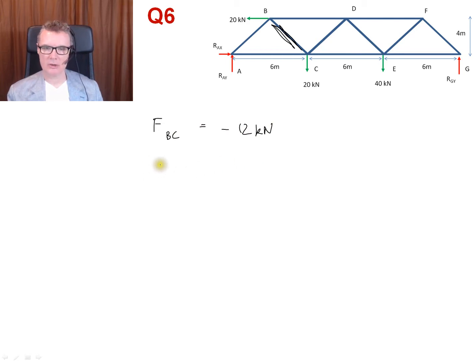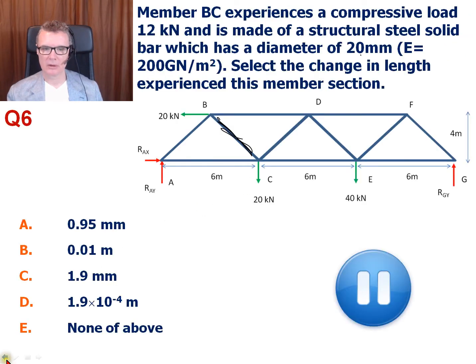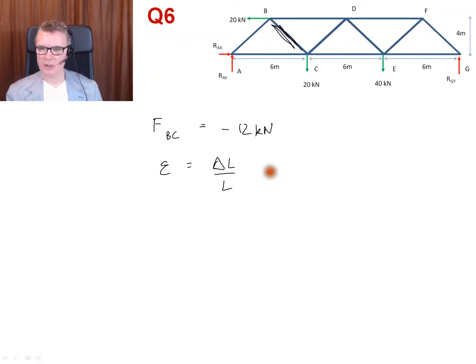So we're going to say that strain is change in length divided by original length. We need to calculate the change in length, so the change in length is going to be the strain times the original length.